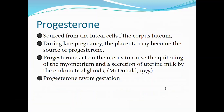Progesterone is sourced from the luteal cells of the corpus luteum. During late pregnancy, the placenta may become the source of progesterone. Its function is to act on the uterus to cause quietening of the endomyometrium — the muscles inside the uterus — and the secretion of uterine milk by endometrial glands, which are usually found in horses. Progesterone also favors gestation and is the hormone that maintains pregnancy.